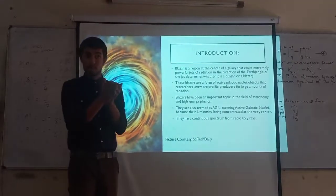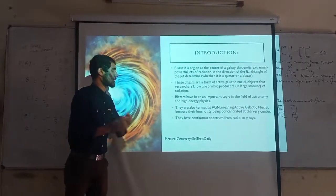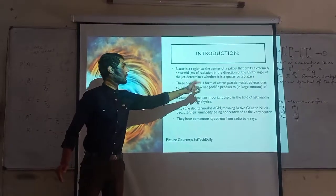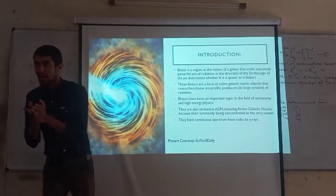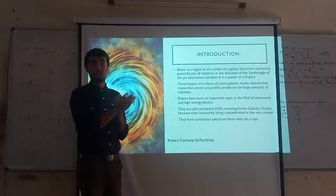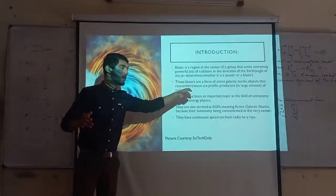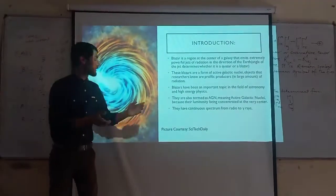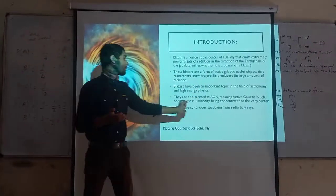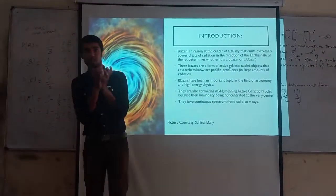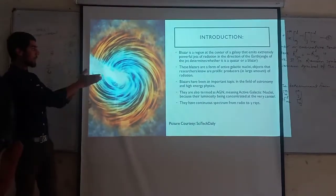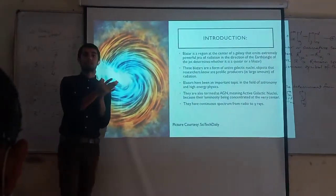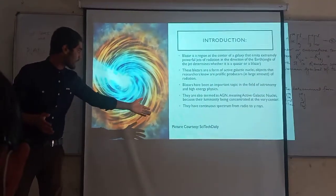If the jet is emitted in some other direction, it is referred to as a quasar. If the jet is directed towards the observer, it is referred to as a blazar. These blazars are a form of Active Galactic Nuclei, or AGN — objects known to be prolific producers of large amounts of radiation, from radio to high energy frequencies, across the full electromagnetic spectrum. Blazars have been an important topic in astronomy and high energy physics. Their luminosity is concentrated at the very center.